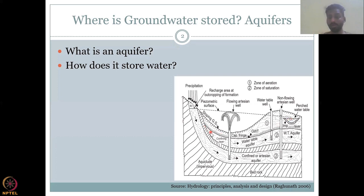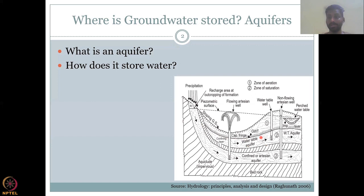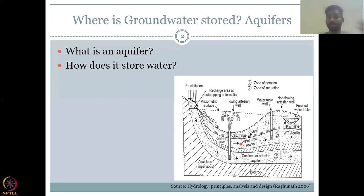Moving further down into the soil profile, you have a layer where all the pore space is full of water. That pore space will not allow more water to come in, so it establishes an imaginary line of water level called the water table. The first zone is called the zone of aeration where the pore space is half full. The second zone, where all the pore space is full of water, is called the zone of saturation. The imaginary line connecting all the water levels is the water table.